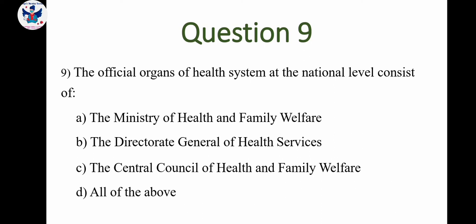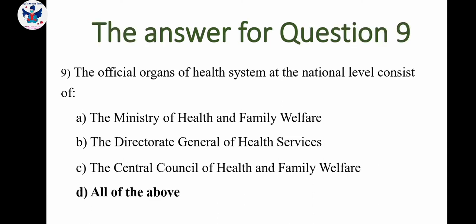Next question: The official organs of the health system at the national level consist of — D: all the above. The correct answer is all the above. The official organs of the health system at the national level consist of all three: the Ministry of Health and Family Welfare, the Directorate General of Health Services, and the Central Council of Health and Family Welfare.